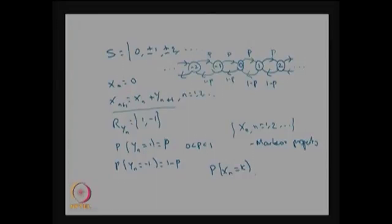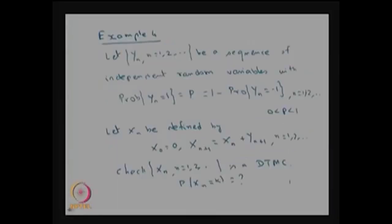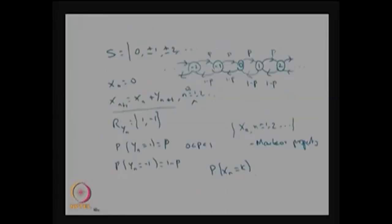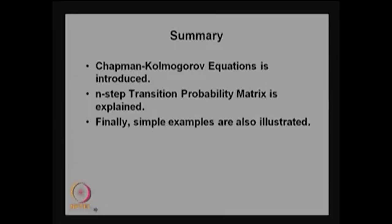A small correction: the running index for x(n+1) = xn + y(n+1) starts from n = 0, 1, 2 and so on. In this lecture we discussed the Chapman-Kolmogorov equation and the n-step transition probability matrix. The n-step transition probability matrix is computed from the one step transition probability matrix raised to the power n. We also discussed four examples explaining these concepts.